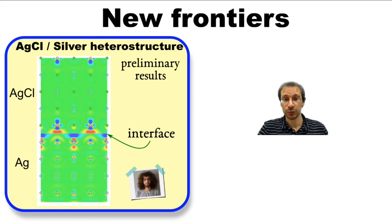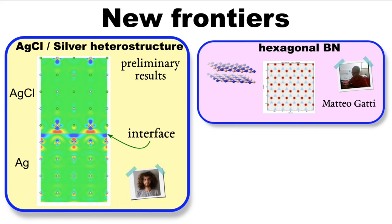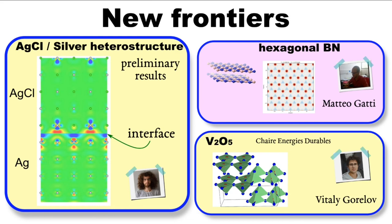Arnaud is now tackling the silver-silver chloride heterostructure to study what happens at the interface. But since the method is general, other colleagues are already using Arnaud's quantum video camera to study completely different materials. Matteo Gatti, for instance, is studying what happens in layered systems, using hexagonal boron nitride as an example, while Vitaly Goreloff, a postdoc recently hired on the Cher Energie Durable, is investigating a particular allotropic form of vanadium oxide promising for its properties for photovoltaics.